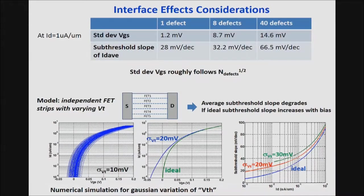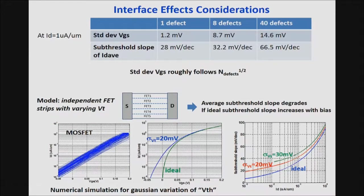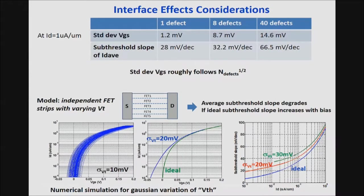Looking at the variation of VGS needed to attain a given current level: with one defect it is only about 1 millivolt, and it increases to 15 millivolts for 40 defects. The standard deviation roughly follows the square root of the number of defects, as expected.